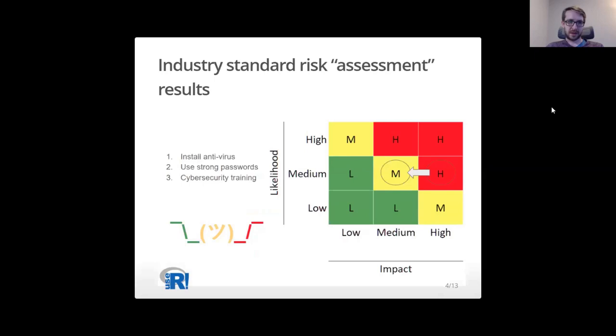Sometimes risk analysts sort the scenarios by risk score and suggest mitigating them from highest to lowest score. Sometimes they create what is called a risk matrix to visualize where their current risk is versus where it'll be once you do things like install antivirus or enforce strong passwords.